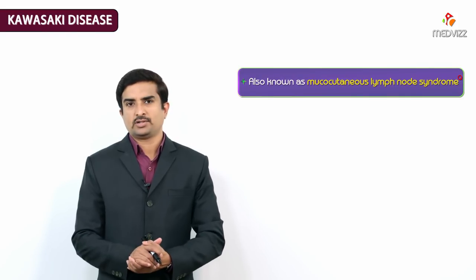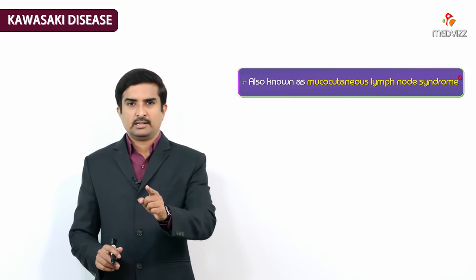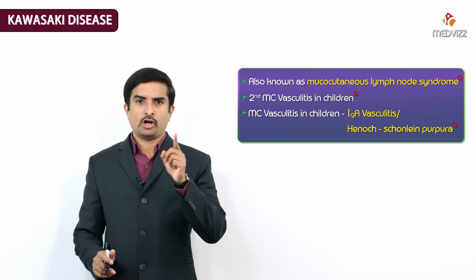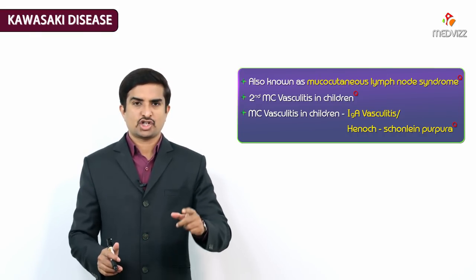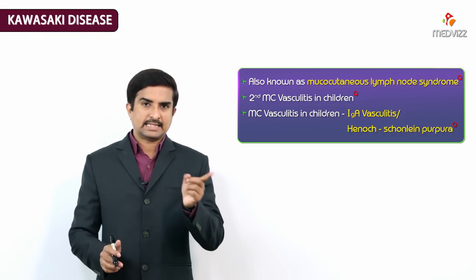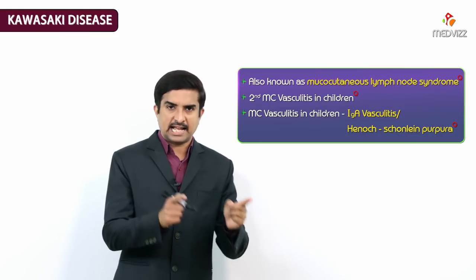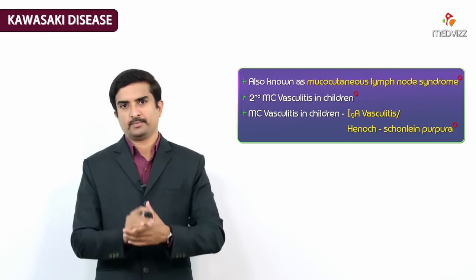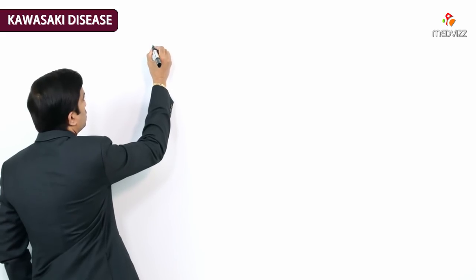Kawasaki disease is also called mucocutaneous lymph node syndrome and it is the second most common vasculitis in children. The most common vasculitis in children is IgA vasculitis, also known as Henoch-Schönlein Purpura. The second most common vasculitis in children is Kawasaki disease. Both IgA vasculitis and Kawasaki are vasculitis of the pediatric group.